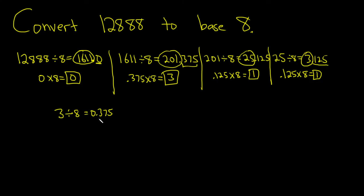You have 3 left over. But let's keep going with our process. 0.375 times 8. And that will give us 3. And then we stop, because the whole number part is 0.